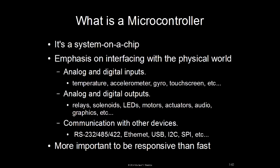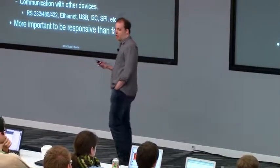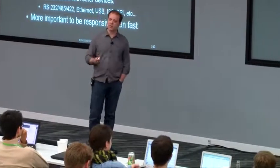The emphasis of microcontrollers is on interfacing to the physical world. They typically come with peripherals for analog and digital inputs — reading temperature sensors, accelerometers, gyros, touchscreens — and outputs for relays, solenoids, LEDs, motors, actuators, audio, graphics. They even have LCD controllers built in now for simple 2D graphics. Communication is also key: RS-232, RS-485, RS-422 are still popular in automation, as well as Ethernet, USB, I2C, and SPI for chip-to-chip communication.